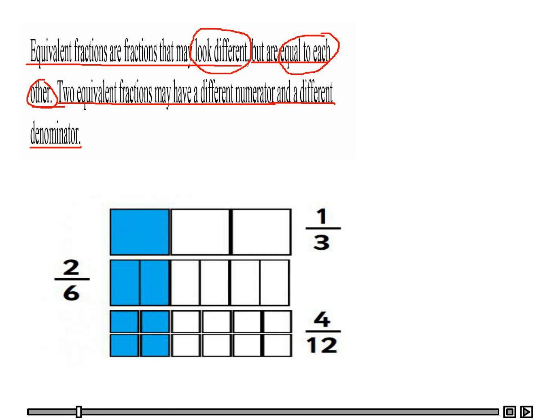Alright, so let's look at the first part where it says look different. As we can see, one-third is different from two over six as far as looking different. And one-third and two over six looks different than compared to four over twelve. So they all look different, but they are the same.